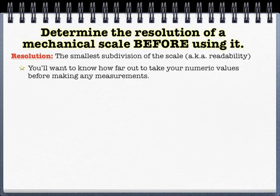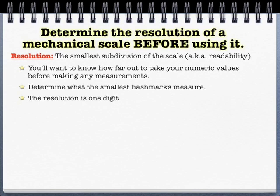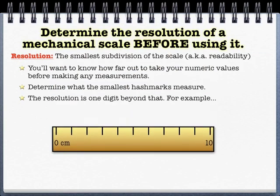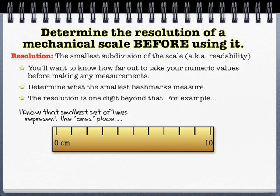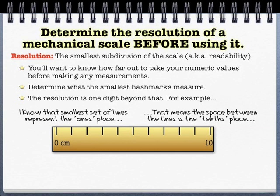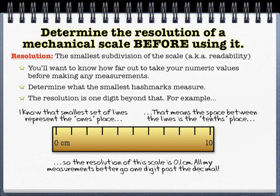The reason this is important is it helps to take a measurement knowing how far past the decimal you should be going. And so all you do is you look at the scale and you see how far the lines take you, or the hash marks, and then you can read the scale one digit further. So for example, on this rather unimpressive 10-centimeter scale, the ones are clearly marked with lines, and so that means that the space in between are the tenths space. So the resolution of the scale would be to the tenth of a centimeter. And if I know that going into my measurements, I can make sure that all my measurements are one digit beyond the decimal, and that's really going to save you a lot of heartache later.